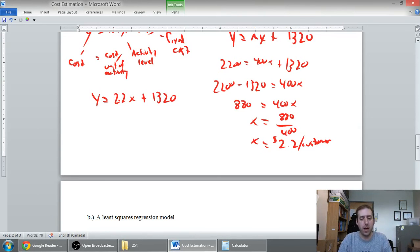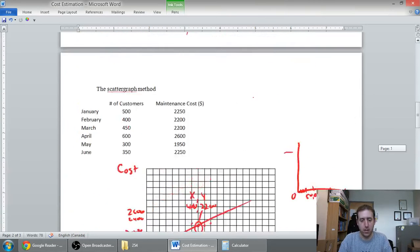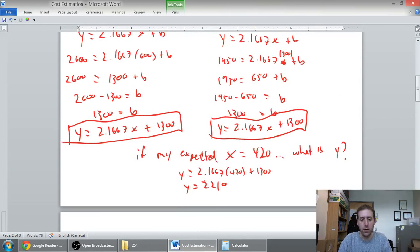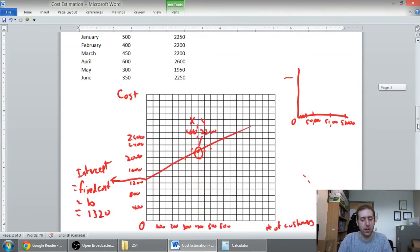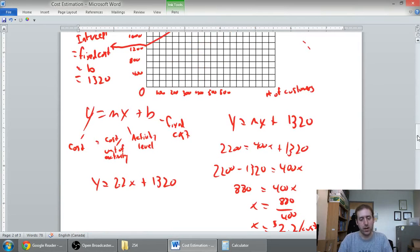So, back to the formula for a line then. y equals mx plus b. y equals 2.2x plus 1320. Now, let's see how that compares to my high-low method. My high-low method, I had a formula of y equals 2.1667x plus 1300. For my scatter graph, I had y equals 2.2x plus 1320. They actually were reasonably close.